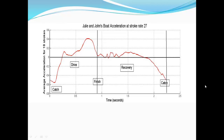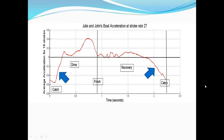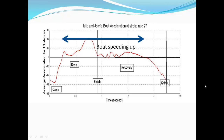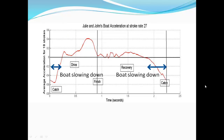The graph begins at the catch and ends back at the catch. Time is on the x-axis and acceleration on the y-axis. It doesn't matter what the units on the y-axis are since it is the shape of the curve that is important. The first thing to notice is that the acceleration is positive during some parts of the stroke and negative during other parts. The definition of acceleration is the rate of change of velocity: if the acceleration is positive, the boat is speeding up; if negative, the boat is slowing down. There is no way to eliminate the negative acceleration during part of the stroke because the rower has to change direction relative to the boat, which requires exerting a force on the boat that tends to slow it down.